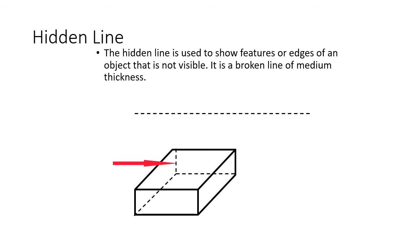A hidden line is used to show features or edges from an object that is not visible. It is a broken line of medium thickness. So you can see this dashed line. So we've got this block here and we can see our visible lines. We can see the edges we can see, but we don't know about the edges in the back. We know they're there, but we can't see them from this view. So to represent them in this view and let the person reading the drawing know that they're there, we do a dashed line. It says, yeah, these lines are here.